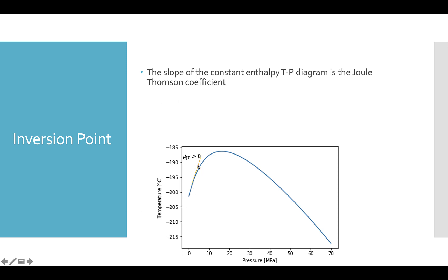Where we have a positive slope, we get the cooling effect — when we drop the pressure of hydrogen, the temperature also drops. Where the slope is zero, the temperature doesn't change when we drop the pressure. Where the slope is negative, the temperature is going to increase when we drop the pressure. The point where the Joule-Thomson coefficient is zero is called the inversion point, because the slope is positive before it and negative after.